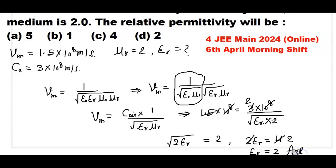The relative permittivity of the medium is 2. The correct answer is option D.